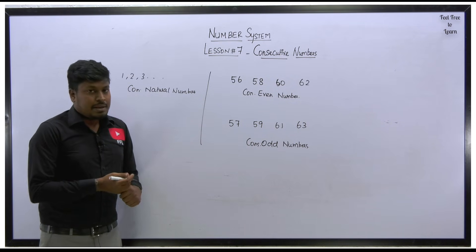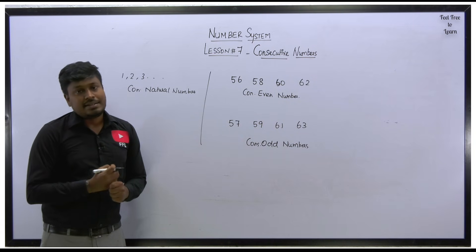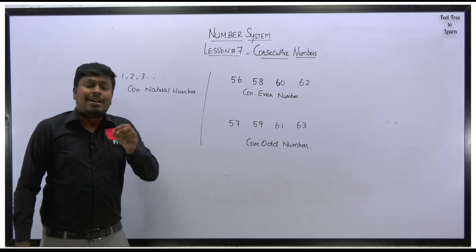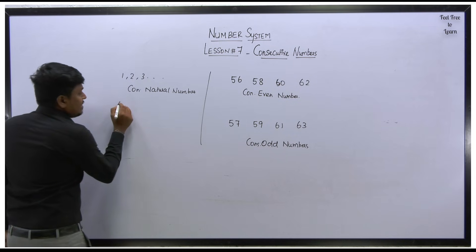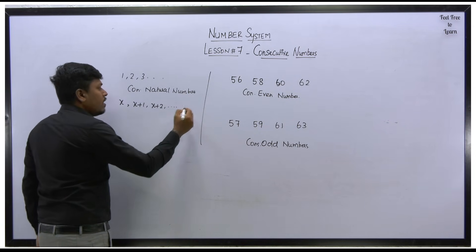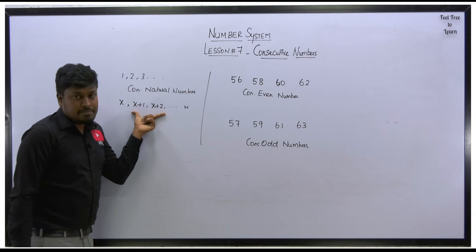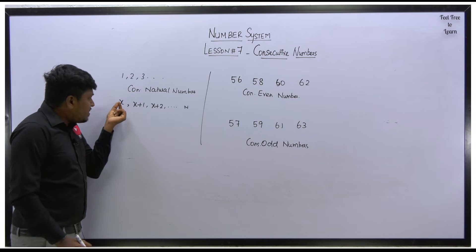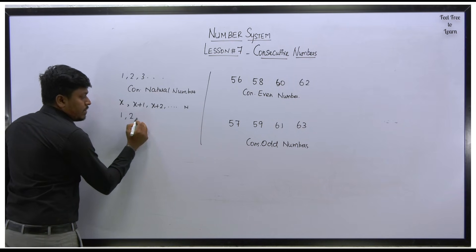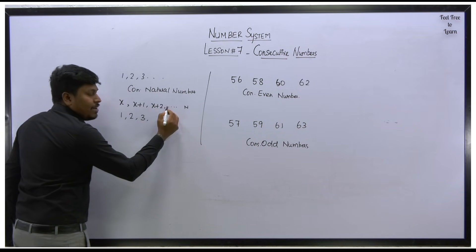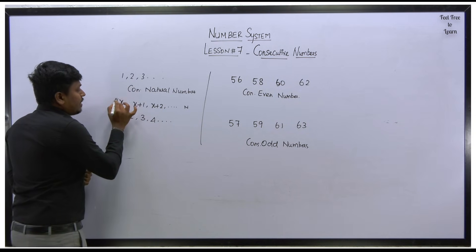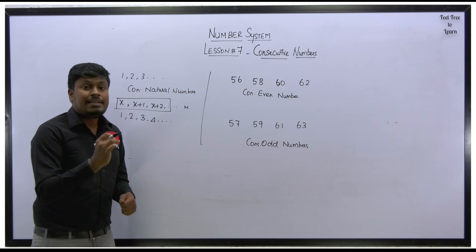There is a standard format used for consecutive numbers. For consecutive natural numbers, the format is: x, x+1, x+2, x+3, x+4, and so on. For example, if you substitute x = 1, you get 1, 2, 3, 4 — which is a consecutive natural number series. So the format x, x+1, x+2 and so on represents consecutive natural numbers.